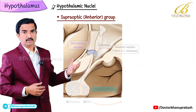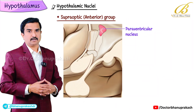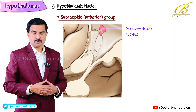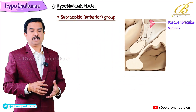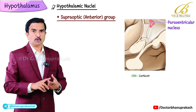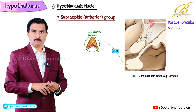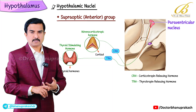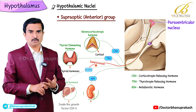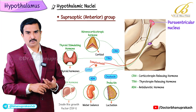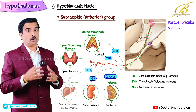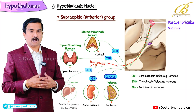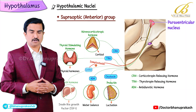Next is the paraventricular nucleus, which is part of the anterior group. It produces corticotropin releasing hormone, thyroid releasing hormone, somatostatin, anti-diuretic hormone, and oxytocin. This nucleus also contributes to water regulation and hormone control.